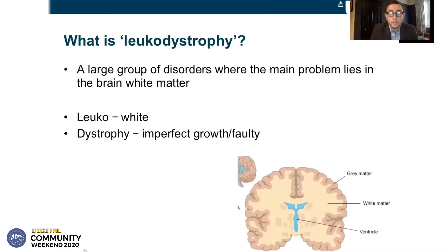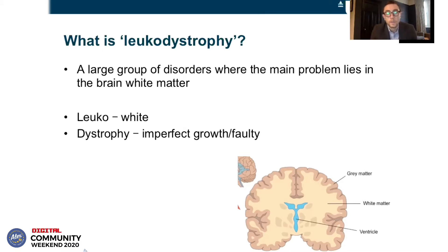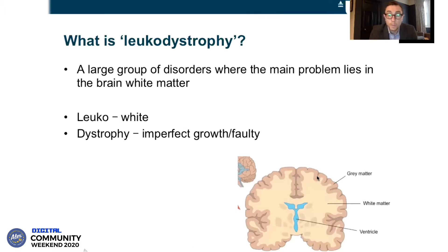So what is leukodystrophy? It really refers to a very large group of disorders where the main problem lies in the brain's white matter. Leuko means white and dystrophy means imperfect growth or a fault somewhere. So leukodystrophy means any problem of the white matter that is genetic. In this diagram, you can see the way the brain is divided into the grey matter and the white matter, which is more centrally.